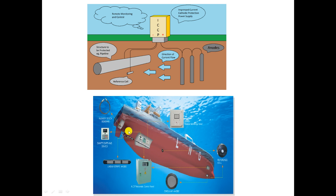This is how corrosion is prevented by cathodic protection — by converting the entire metal surface into a cathode. In electrochemical theory, a metal acting as a cathode is protected from corrosion. That is why the entire metal surface is converted into a cathode, and by making it cathodic, we prevent corrosion.